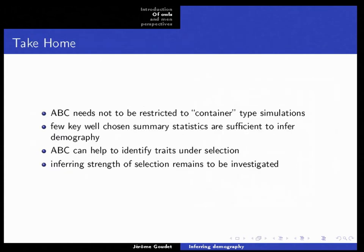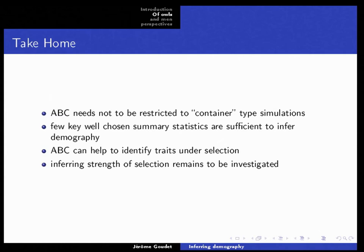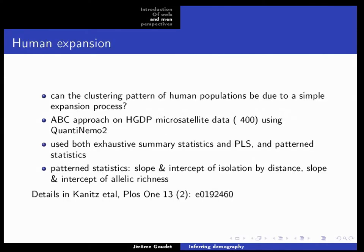The take-home from the barn owl example is that ABC need not be restricted to simple container simulations — we showed it works with real geography, and a few key summary statistics are sufficient to infer demography. ABC can also help identify traits under selection, although inferring the strength of selection from this type of approach remains a challenge.